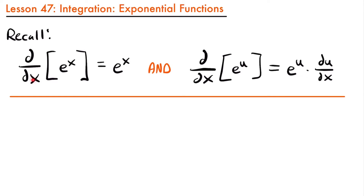Previously we learned how to take the derivative of the exponential function e to the power of x, and we found that its derivative was the same function e to the power of x. We also have the version where if you have e to the power of some function u, defined with x, that equals e to the power of u times the derivative of u. So if you had e to the power of x squared, the derivative would be e to the power of x squared times the derivative of x squared.